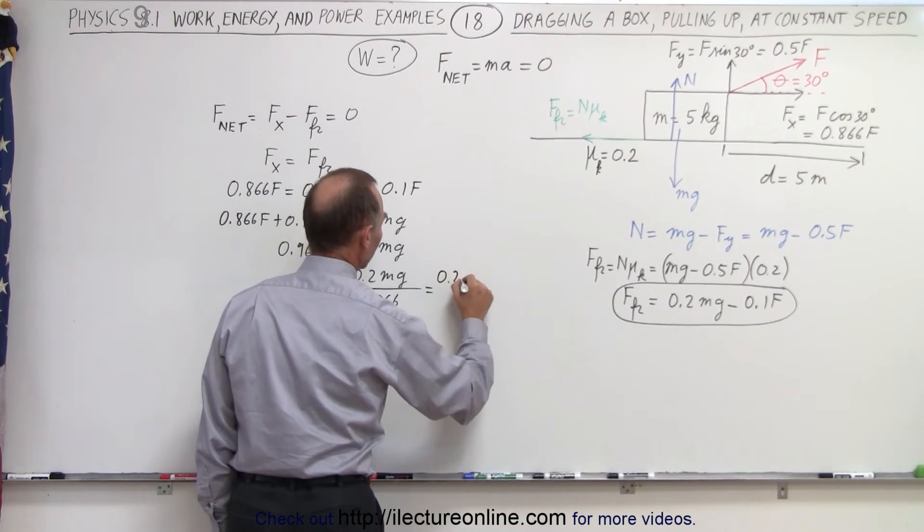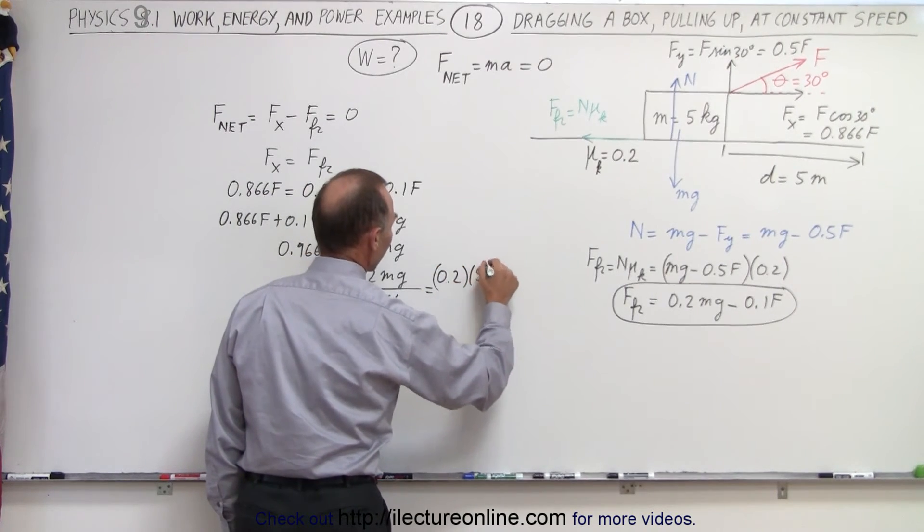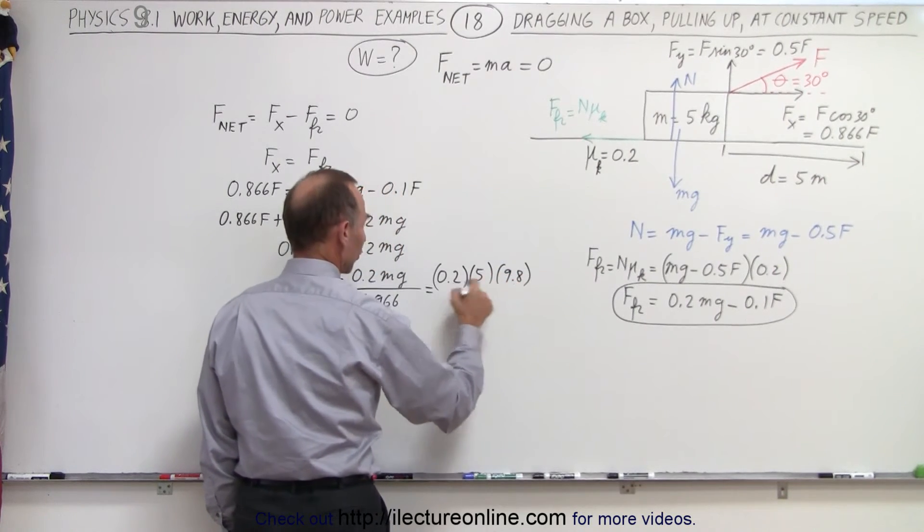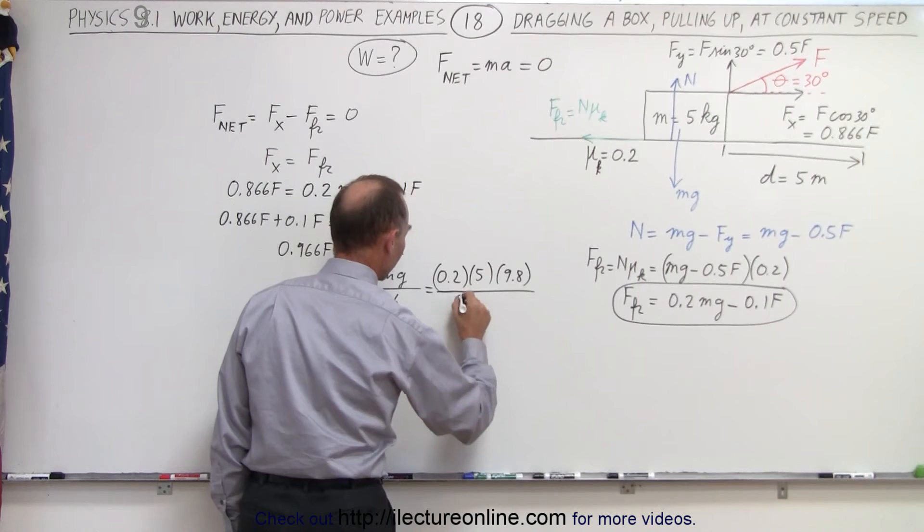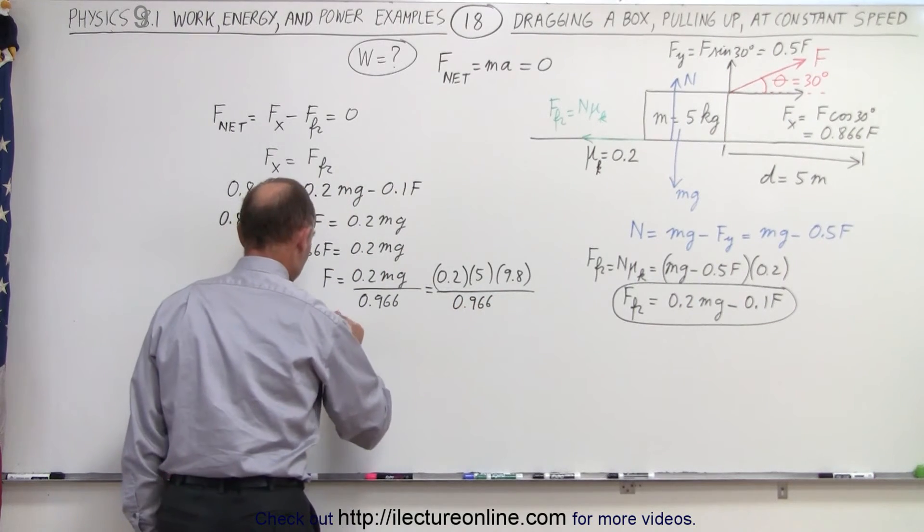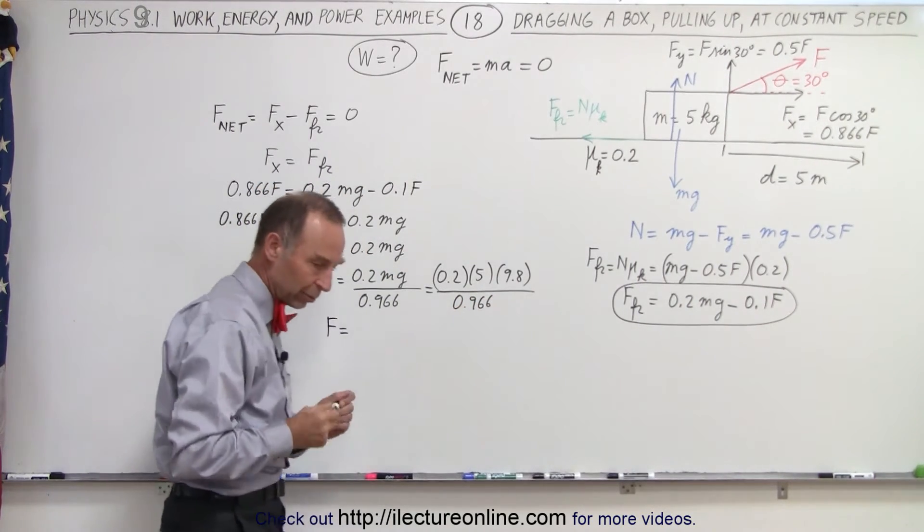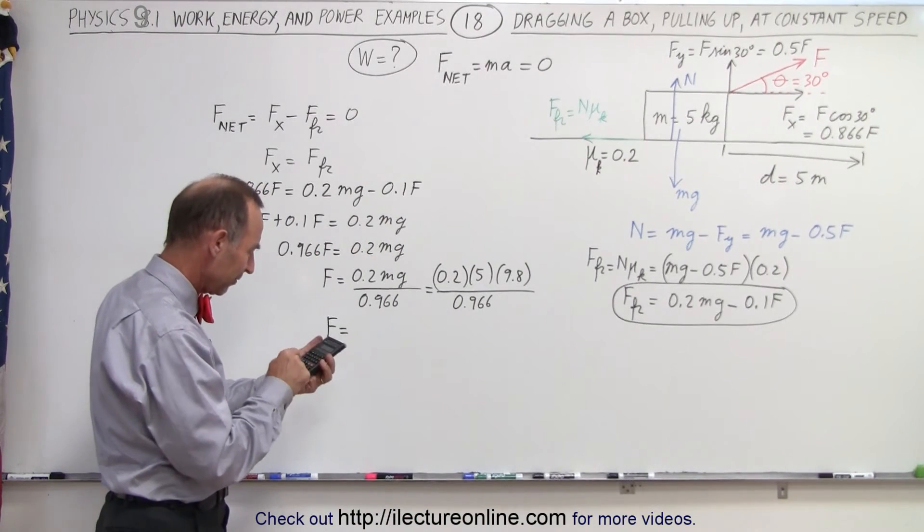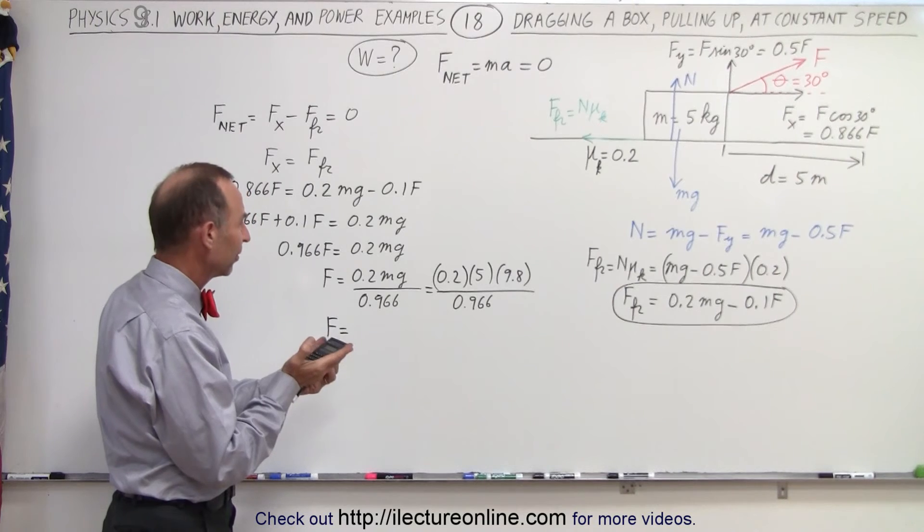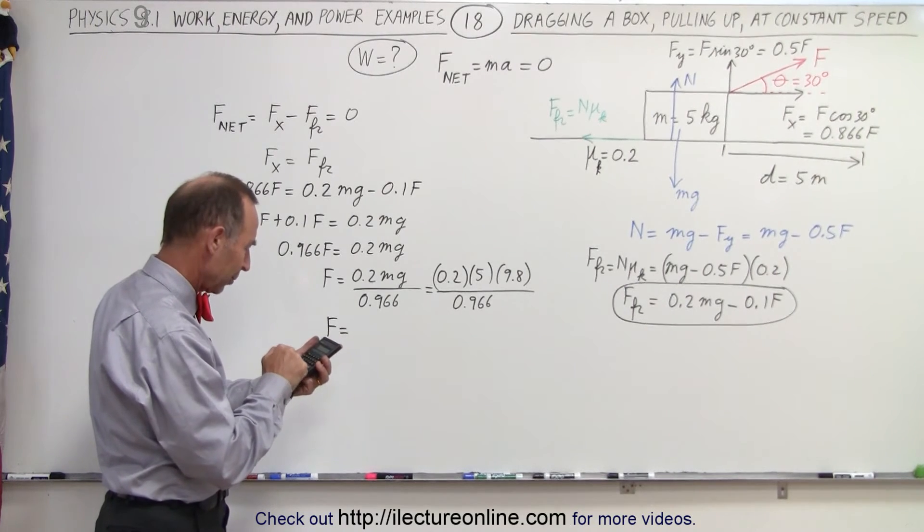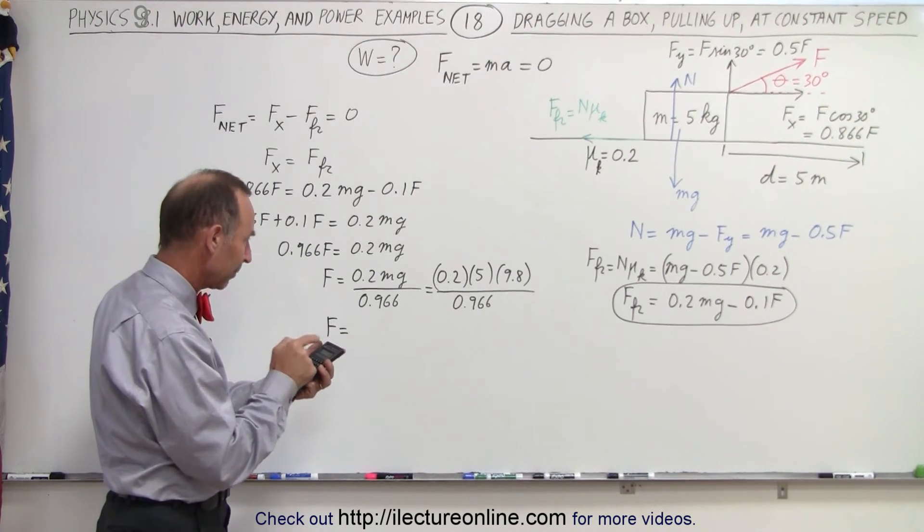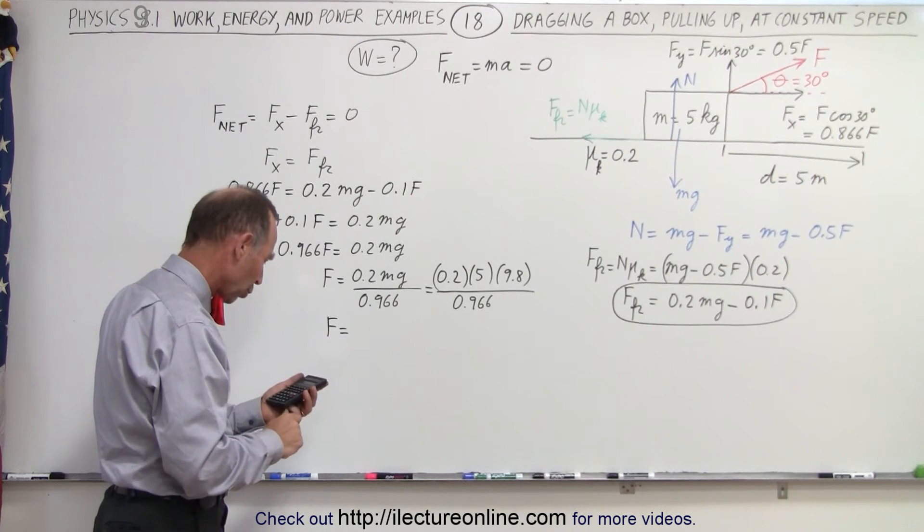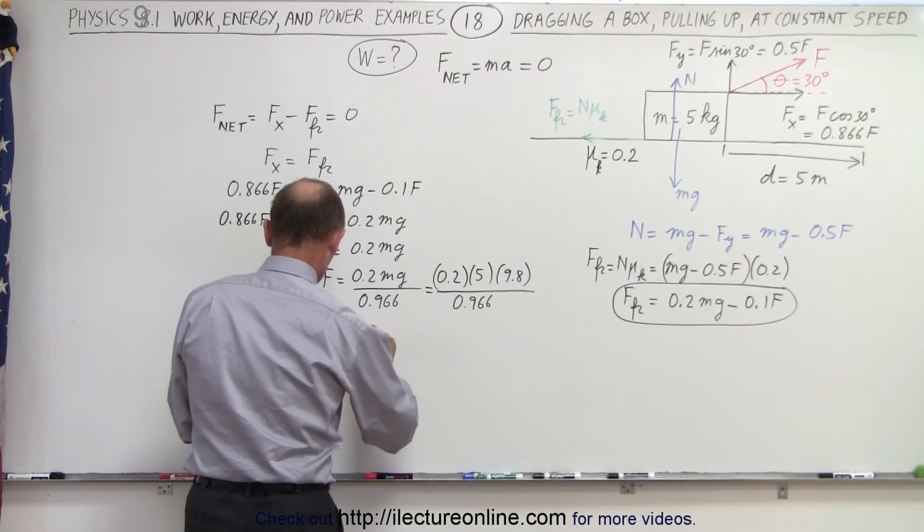So f is equal to 0.2mg divided by 0.966, which is equal to 0.2 times 5 kilograms for the mass times 9.8 meters per second squared divided by 0.966.